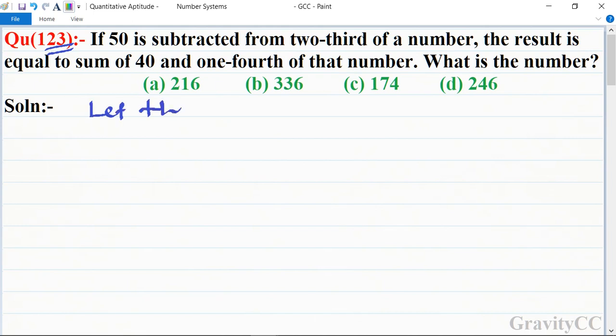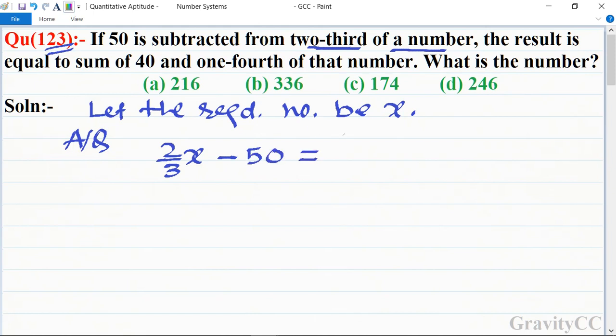the required number be x. Let the required number be x. And according to the question, two-third of a number which is subtracted by 50 is equal to the sum of 40 plus one-fourth of that number.